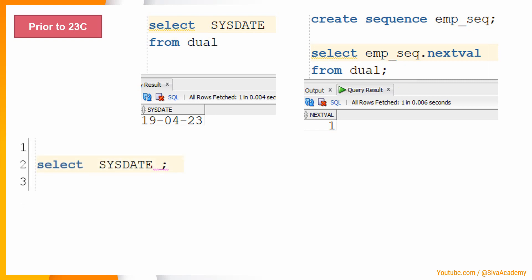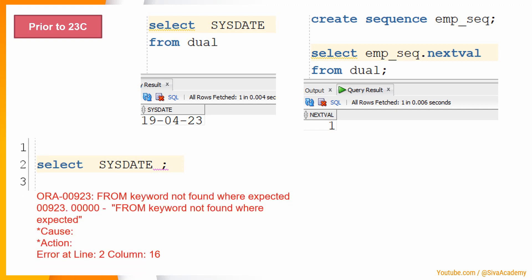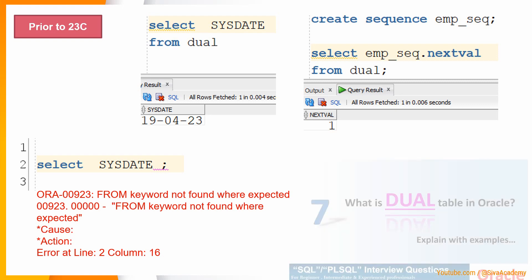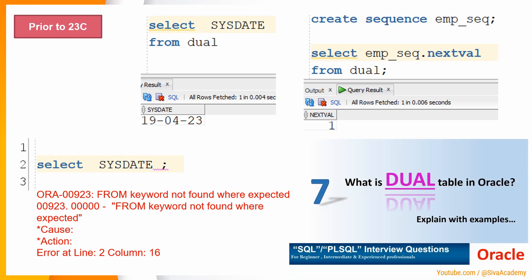If we simply write SELECT SYSDATE without a FROM clause in previous versions of Oracle, we get an exception: FROM keyword NOT FOUND WHERE EXPECTED. So till the previous version of Oracle we cannot write a SELECT statement without a FROM clause. That is why the DUAL table is very important — and in fact this is one of the most interesting interview questions. I have covered the DUAL table specifically in a separate video; the link is in the description.